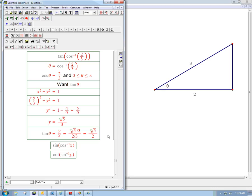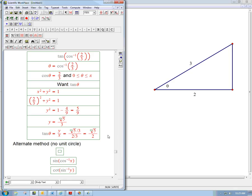So, in the alternate method, not on the unit circle, here we have x equals 2, or like the adjacent, let's say, equals 2, and the hypotenuse is equal to 3.